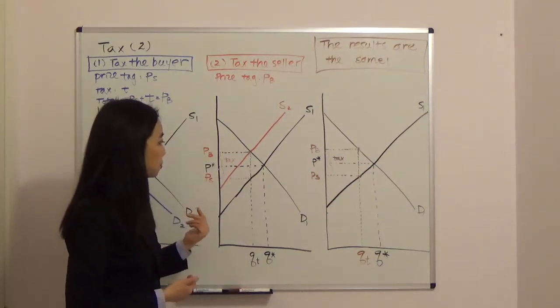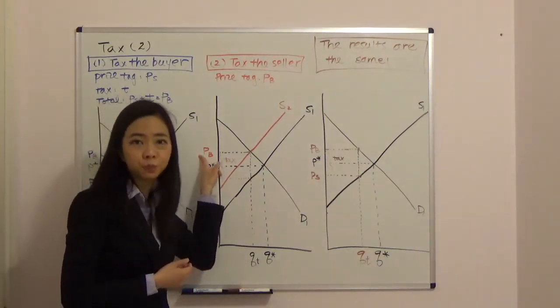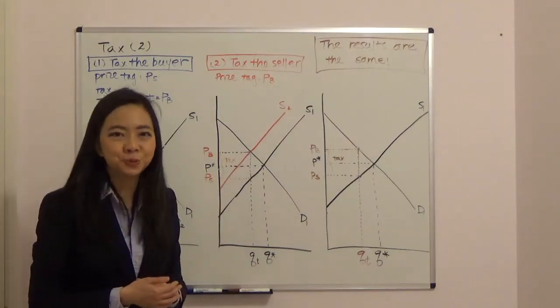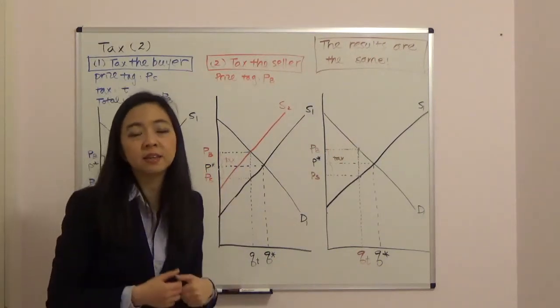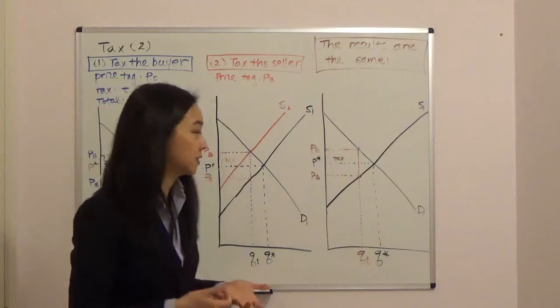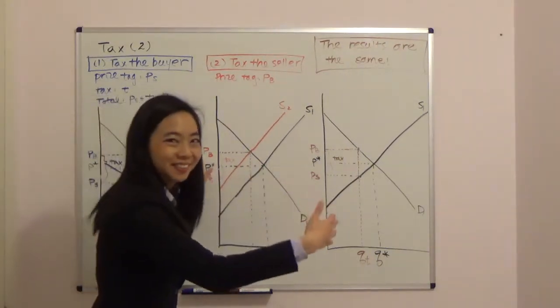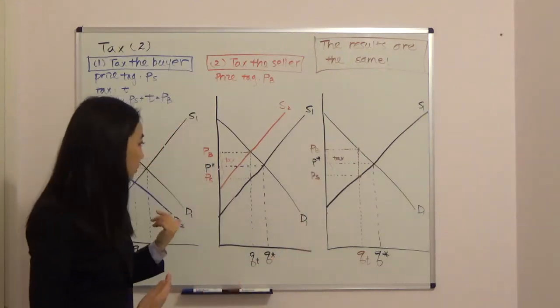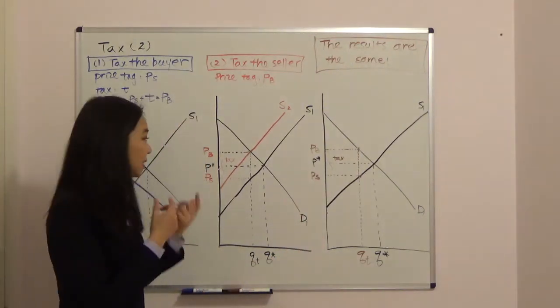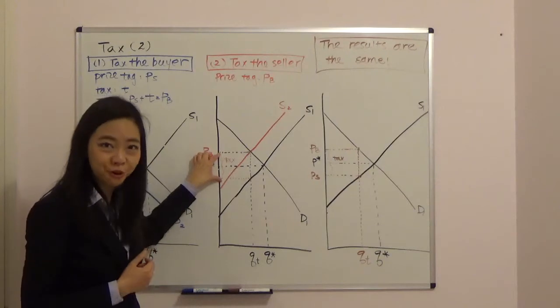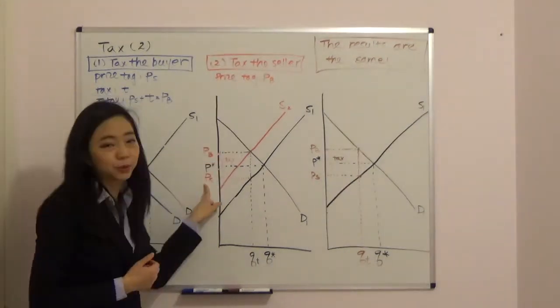So the seller is going to list price PB on the price tag. Now you're the consumer, you see the price PB and then you go to the cashier, your invoice is exactly PB. And behind the curtain, out of your sight as a consumer, the seller is going to collect PB and pay tax T dollars to the government and go home with price PS.